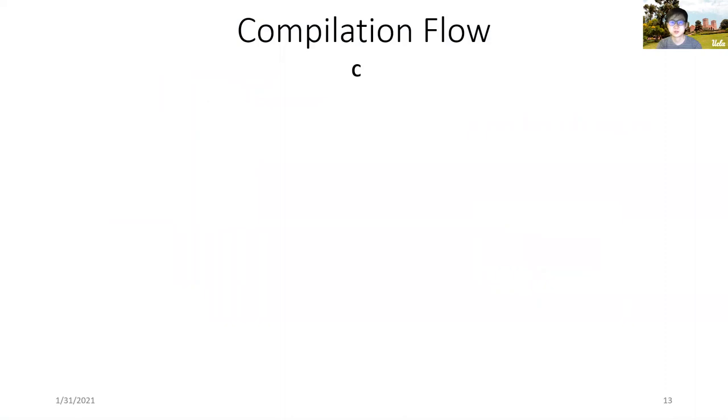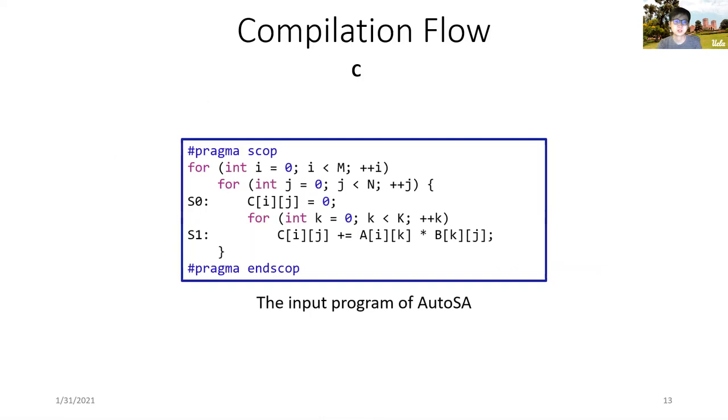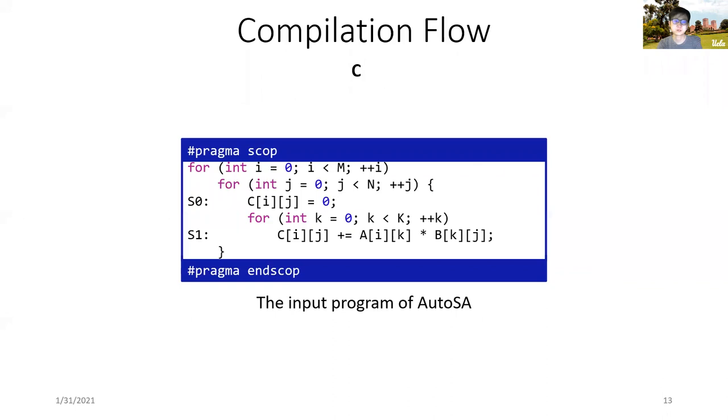As mentioned earlier, the input program is C code to be mapped to the systolic array. Here we show an example program of matrix multiplication that can be used as the input of AutoSA. Note that we use a pair of pragmas to annotate the code region that we are interested in to transform to the systolic array.